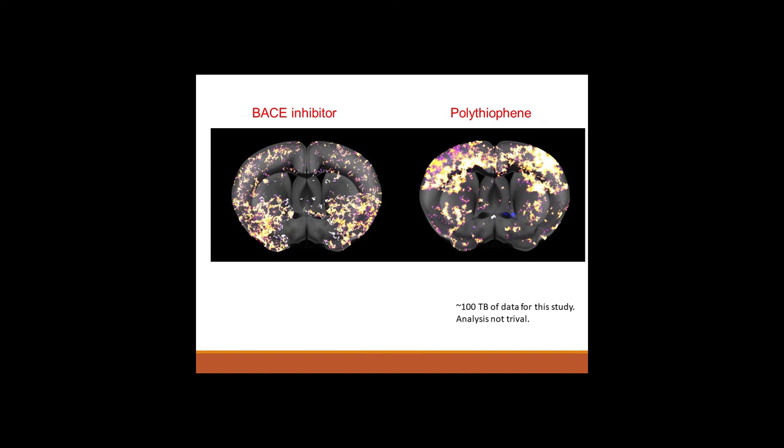And I mean, it's incredible, the BACE inhibitor hits only the basal part of the brain, the polythiophene essentially hits only the upper part, the dorsal part of the brain. And it's almost yes and no, it's almost positive negative.